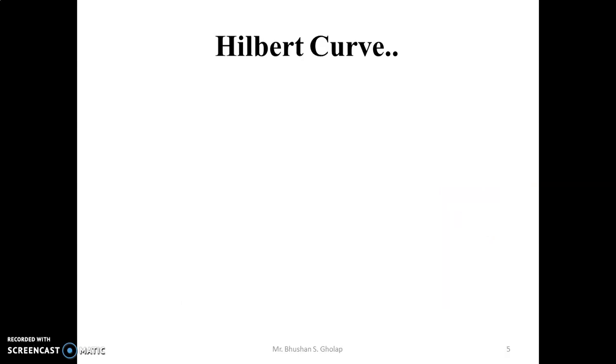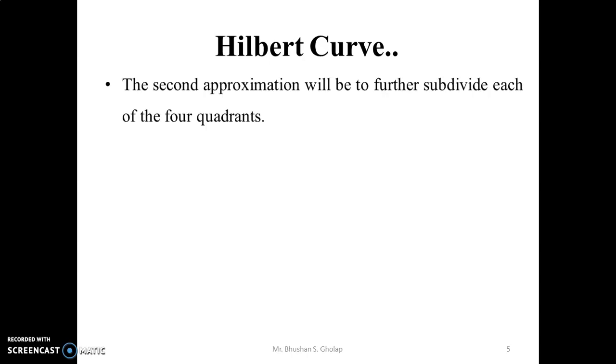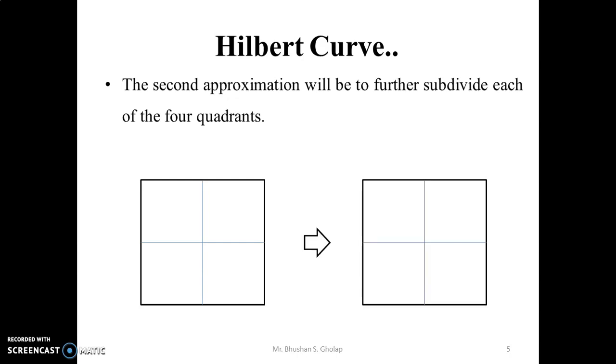The second approximation will further subdivide each of the four quadrants of the square. In the second approximation, we subdivide each of the four quadrants row-wise and column-wise. Again, in each quadrant, we create or draw a new square.